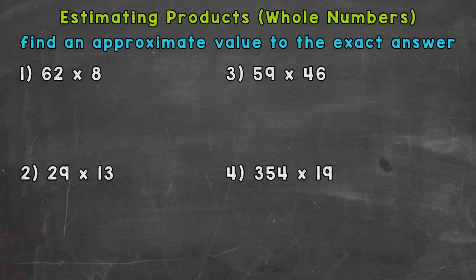In this specific video, I'm going to cover how to estimate whole number products, and we have four examples that we're going to go through together in order to get this down. So let's jump into number one, where we have 62 times 8.